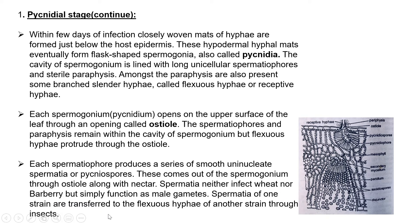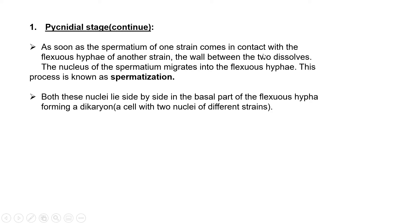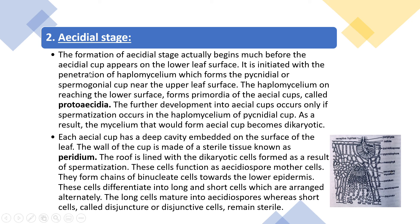Spermatia of one strain are transferred to the flexuous hyphae of another strain through insects. As soon as the spermatium of one strain comes in contact with the flexuous hyphae of another strain, the wall between the two dissolves and the nucleus of the spermatium migrates into the flexuous hyphae. This process is known as spermatization. Both nuclei lie side by side in the basal part of the flexuous hyphae, forming a dikaryon — a cell with two nuclei of different strains.